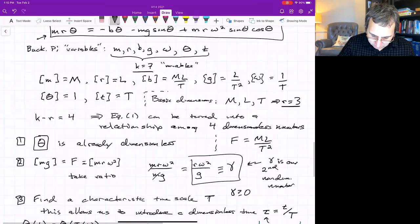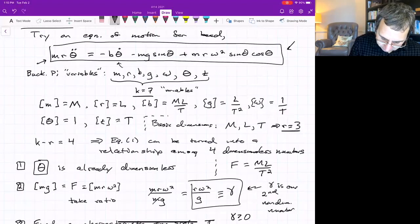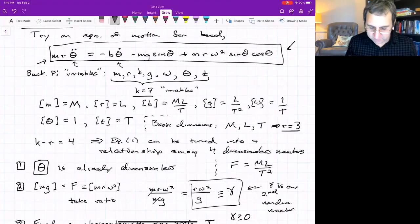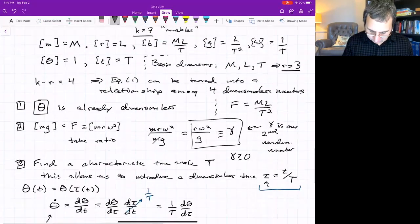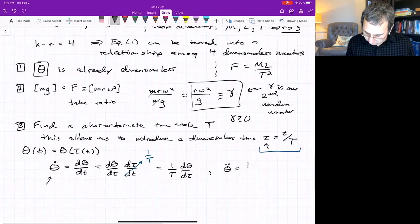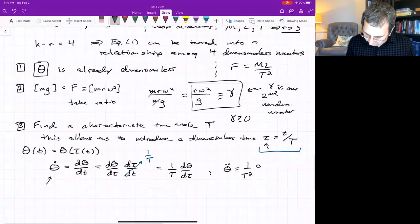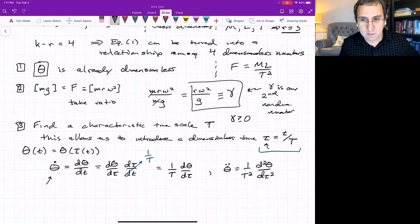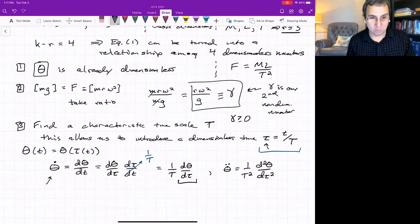So that means wherever we have the derivative with respect to the actual time, we could substitute in this, one over T d theta d tau. Let's look up here. We have a first derivative. We also have a second derivative over here. If you do this twice, here's what you'll get: theta double dot equals one over T squared, second derivative of theta with respect to the non-dimensional time tau.